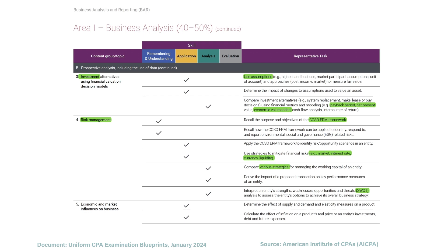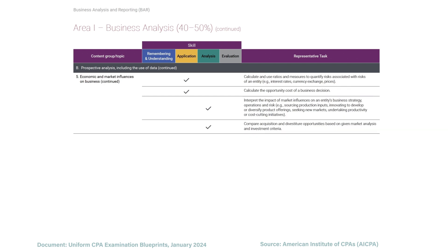From there we move into economics. We need to know about supply and demand — including how you can change supply and demand and what factors affect it — and how to calculate elasticity. We also need to know how inflation works and how it affects the prices of products, how to use ratios to measure different risks like interest rates, currency exchanges, and prices, how to calculate the opportunity cost of a business decision, and how to interpret the impact of different strategies, operations, and risks within the context of economics.